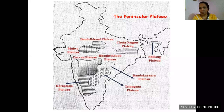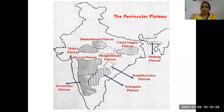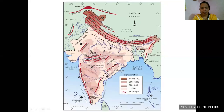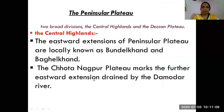In the eastern part, there is an extended part of the peninsular plateau. This part is also considered part of the peninsular plateau, even if it is not directly connected with the main peninsular plateau. This triangular region visible on the map is the peninsular plateau. The Central Highland lies to the north of the Narmada River, with the Aravalli ranges to the northwest.